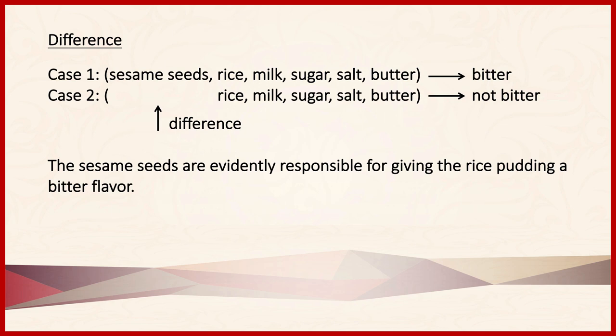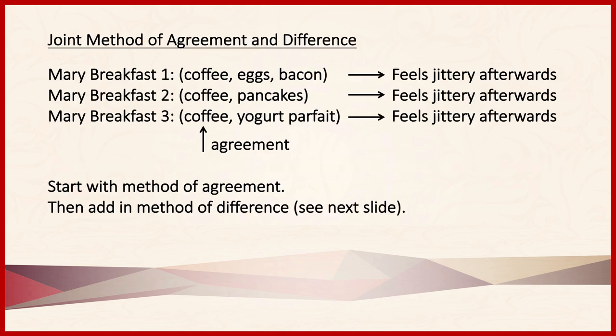Agreement and difference can be combined to produce the joint method of agreement and difference. In this example, Mary has eaten three breakfasts. In the first, she had coffee, eggs, and bacon. In the second, coffee and pancakes. In the third, coffee and yogurt parfait. In each case, she felt jittery afterwards. Because she had coffee all three times, the method of agreement suggests that coffee is what's making her feel jittery.